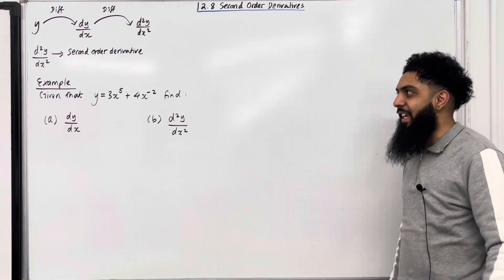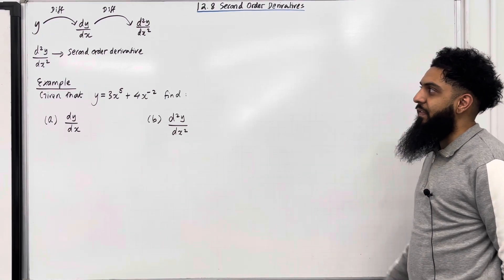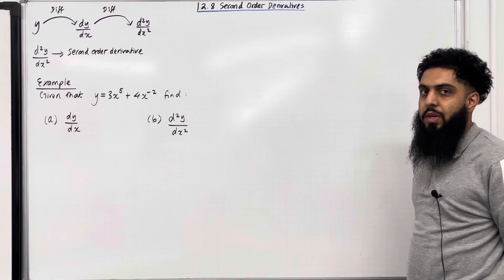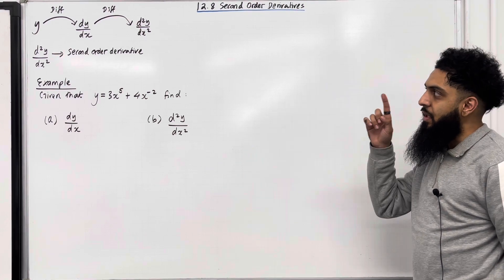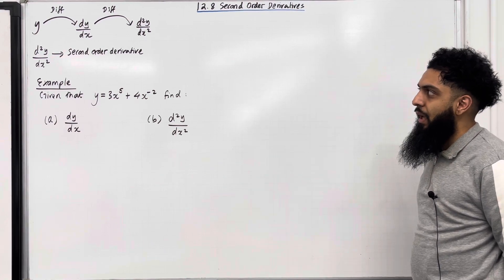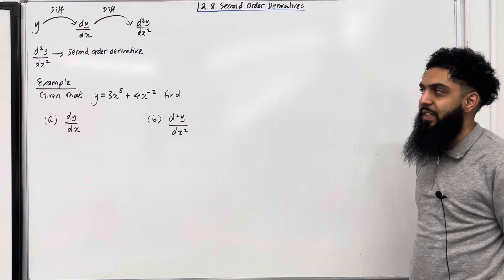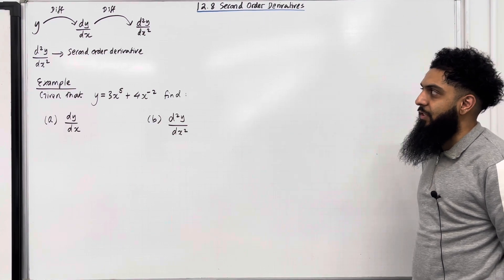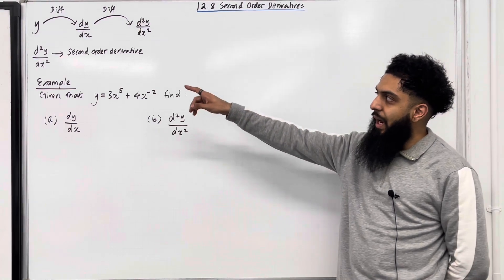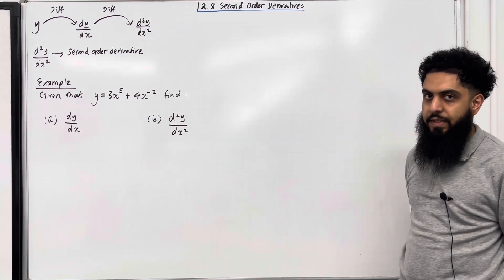Let's have a look at the key facts of this section. Ladies and gents, if I begin with y and I differentiate it with respect to x, I get dy over dx. Then if I begin with dy over dx and I differentiate it with respect to x, I get d²y over dx². d²y over dx² is called the second order derivative.